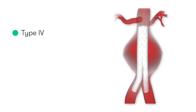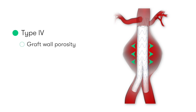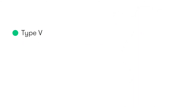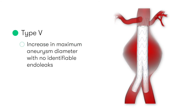Type 4 endoleaks describe when there's a general endovascular wall porosity, so there's a slow oozing from within the vessel lumen via the graft wall into the adjacent aneurysm sac. Type 5 endoleaks describe when there's an increase in the maximal aneurysm diameter identified typically on surveillance imaging; however, there's no obvious identifiable leak.